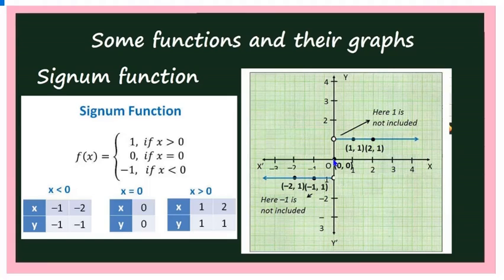When x is greater than 0, f(x) = 1. So when x = 1, 2, or 3, f(x) = 1. Joining points (1,1), (2,1), (3,1) gives a horizontal line at y = 1 for positive x. The point (0, 1) is not included — mark it with an open circle. This is the complete graph of the signum function.